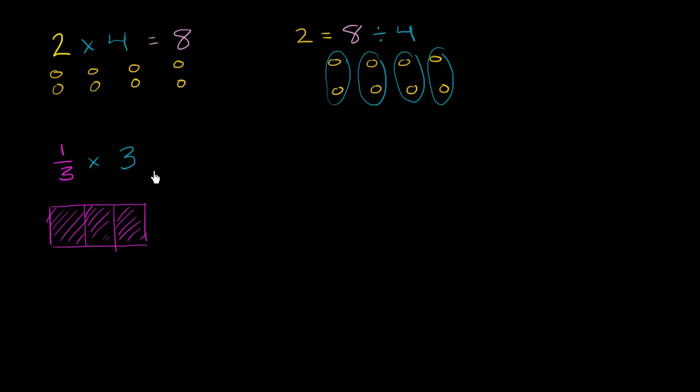And we get the whole. This is 3 thirds, or 1. So this is going to be equal to 1. So you use the exact same idea. If 1 third times 3 is equal to 1, then that means that 1 divided by 3 must be equal to 1 third.